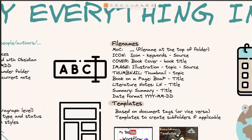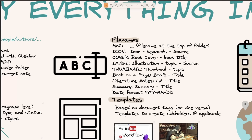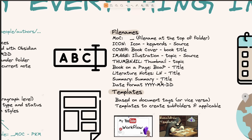So you can see the various naming conventions: book cover, illustration, thumbnail, book on a page which starts with 'boop', literature note starts with 'ln', etc. And the date format I use is year-year-month-month-day-day, because that consistent naming helps me find stuff easier.